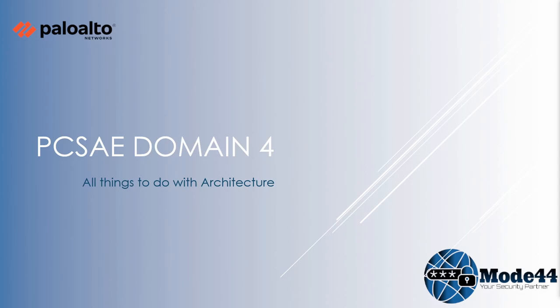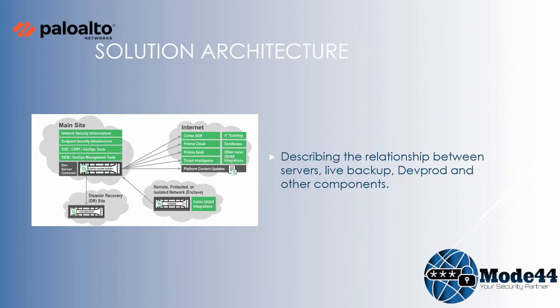For domain 4 we need to talk about all things to do with the architecture, the threat intel side of things, and distributed databases and standalone servers. The solution architecture shows the main site with the main Cortex application server, disaster recovery, and on the internet you've got platform content updates, threat intelligence, Prisma Cloud, ticketing, sandboxes, and all the remote services. For remote protected or isolated networks you can use XOR engines, where you can run XOR integrations from protected areas because it's only one connection back to the main server.